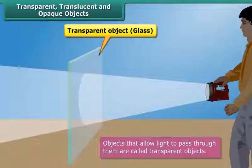Glass, clean air, pure water, etc. are examples of transparent objects.